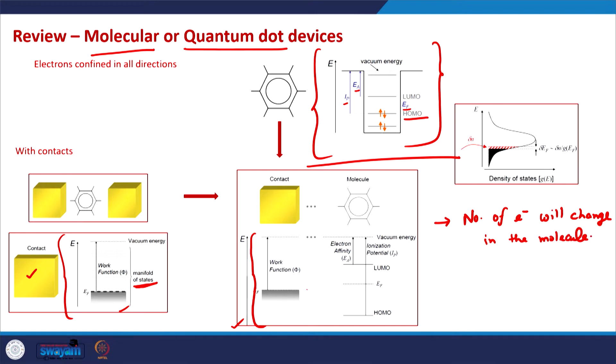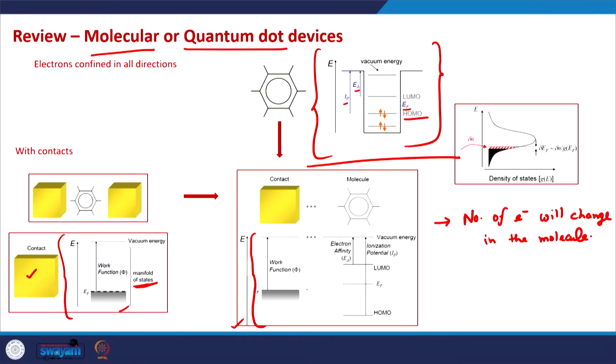When there is electron transfer, the number of electrons will change in the molecule. The number of electrons will also change in the contact. But since the contact has a lot of electrons — it is a bulk contact — a small change in the number of electrons there has no consequence. However, the molecular or quantum dot system is small, so a change in electron number will fill or empty the electronic states.